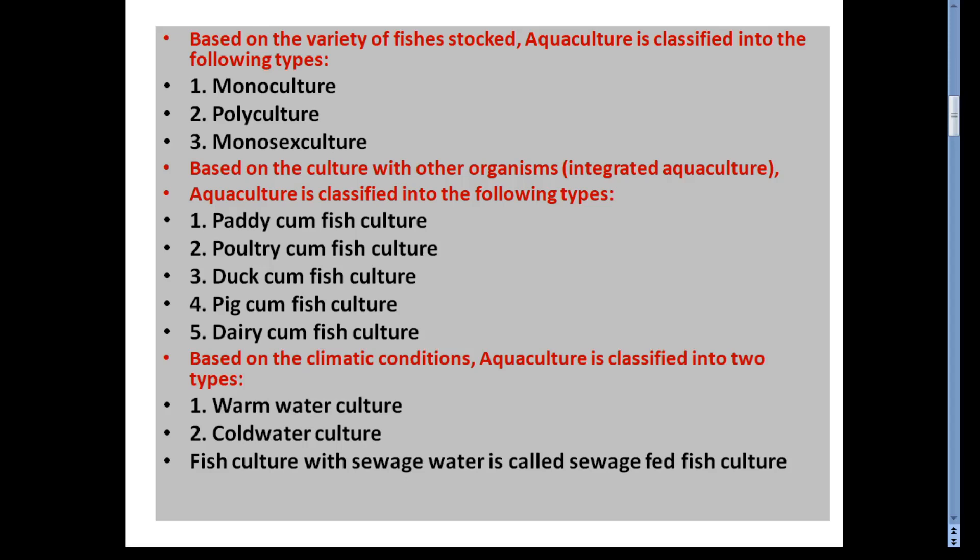Based on the variety of fishes stocked, aquaculture is classified into the following types: monoculture, polyculture, and monosex culture.